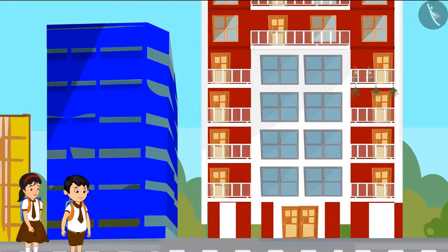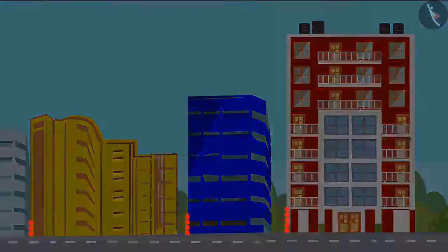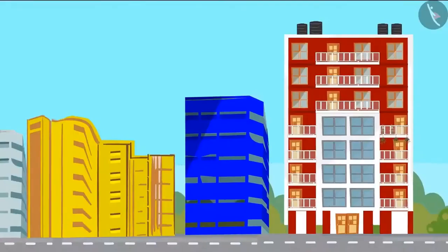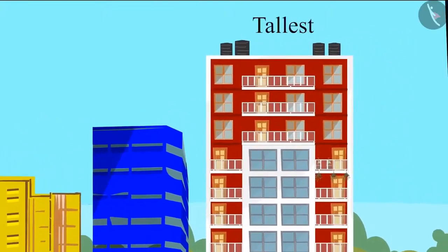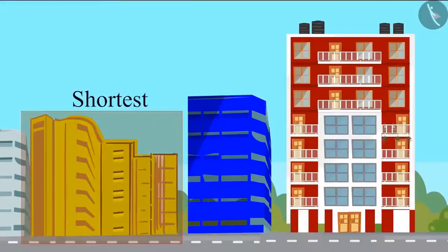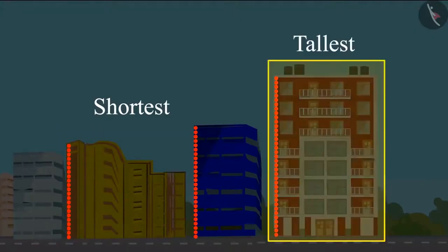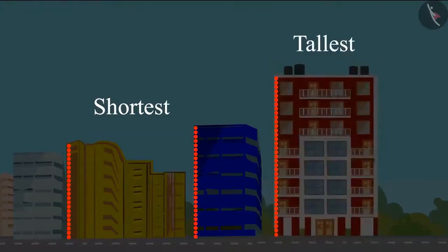Yes Pinky, that glass house is the tallest among all these houses. So this means that the yellow house is the shortest of the three houses. Children, the yellow house is the shortest and the glass house is the tallest of all three houses.